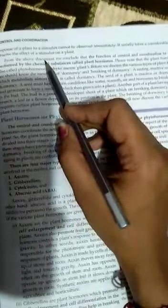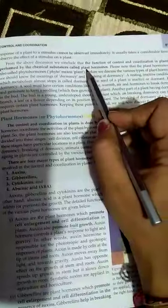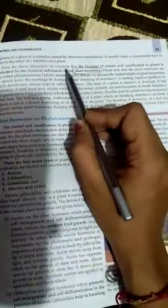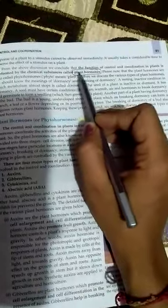From the above discussion, you can conclude that the function of control and coordination in plants is performed by chemical substances known as plant hormones. Plant hormones are also known as phytohormones. Phyto means plant, and hormones are secretions.